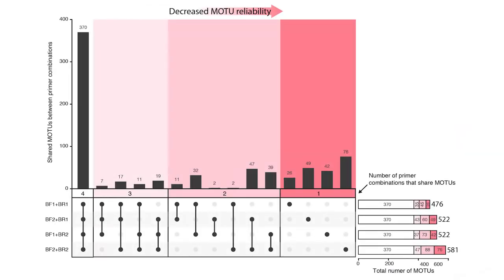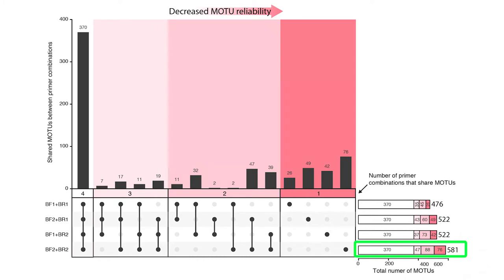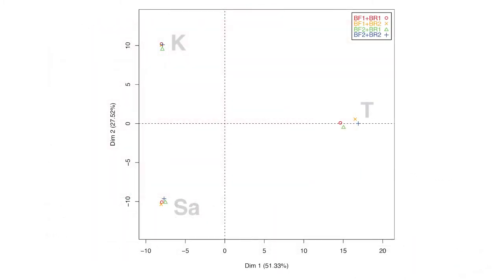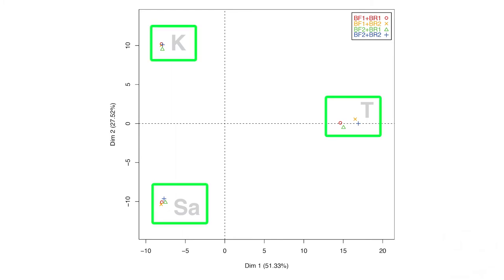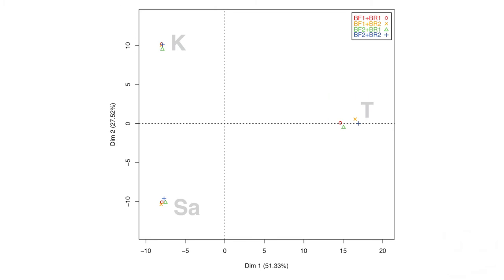Throughout the study, all four tested primer sets performed very similarly. As seen in the bar plot, most OTUs are shared and detected with all primer sets. The BF2-BR2 primer set detected the most OTUs, but all other primer sets showed quite similar values. In a principal component analysis, separating samples by the three stream types, the primers always clustered together with the same stream type, confirming they perform very similarly.